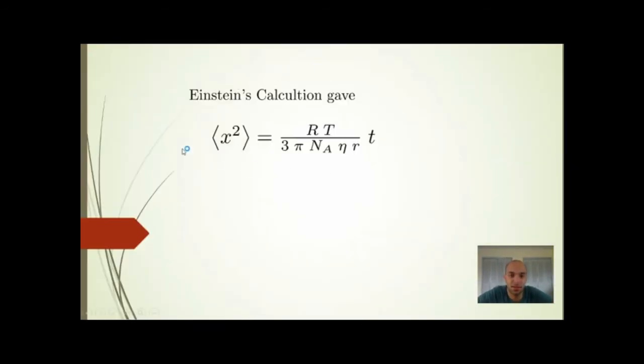This is the Einstein result. He predicted that the distance squared of the particle is going to be proportional to the time. So when I let it run for eight seconds instead of four seconds, it's going to be twice as far.